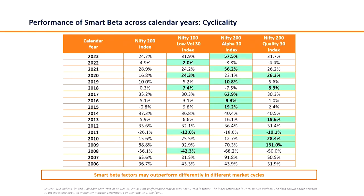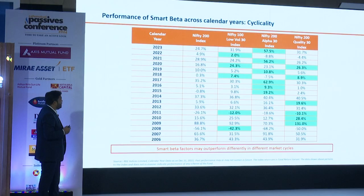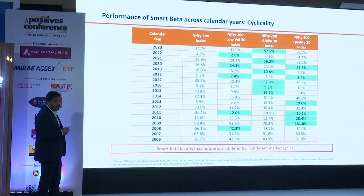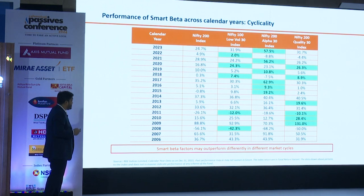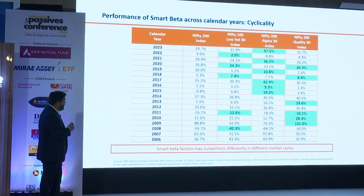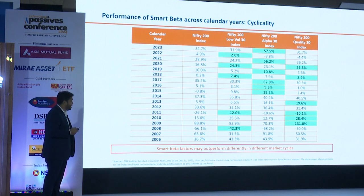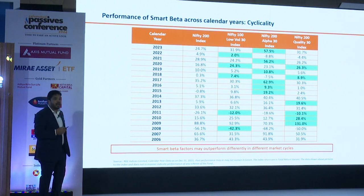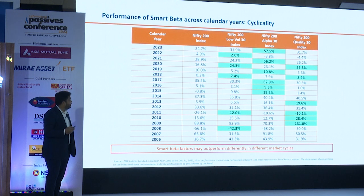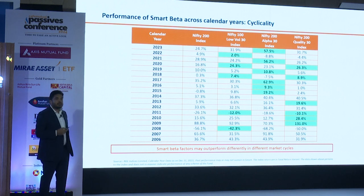And then look at low volatility — when it has performed. Relatively in 2022 and 2018, when the market was very volatile, it gave 7.4% return. In 2011, when Nifty 200 was down by 26%, it was only down by 12%. Look at quality also. So that is what smart beta is all about — it's a very fancy term, but the intention is very straightforward: to target a certain behavior and certain characteristics which may be very suitable for different risk profiles.